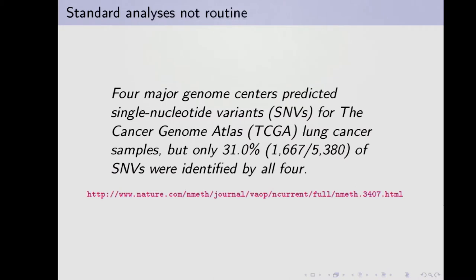The reason it's so hard is that even standard analyses are not routine. This is a quote from a paper by the TCGA folks — the Cancer Genome Atlas — where there were four major genome centers calling SNPs, which are the easiest thing to call. People who know what they're doing, calling the easiest possible thing — and if you compare calls between all four centers, only 31% of calls were the same. We should be talking about 99.9-something percent concordance, but the reality is it's hard. Cancer calling is not a finished thing.